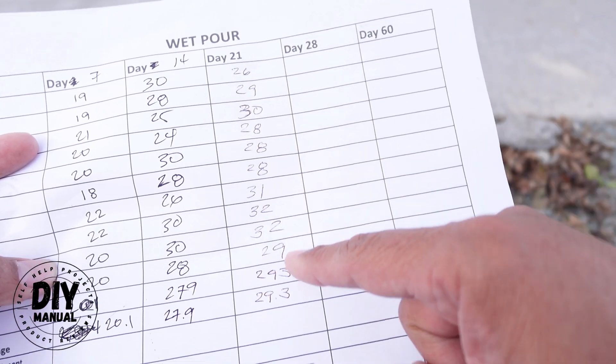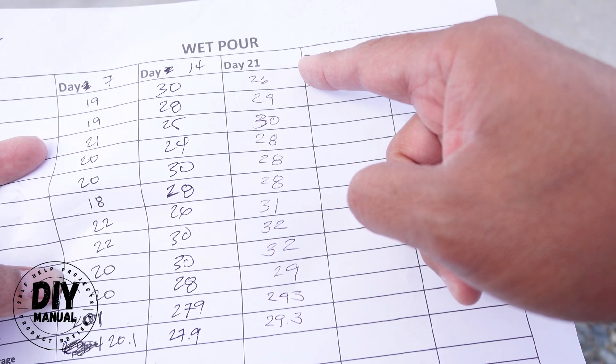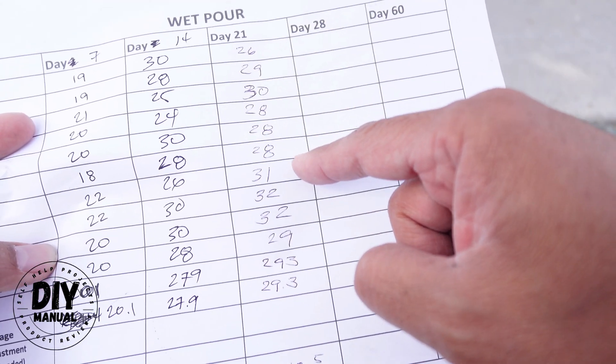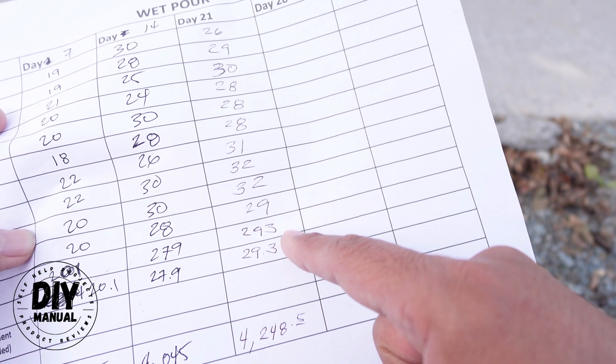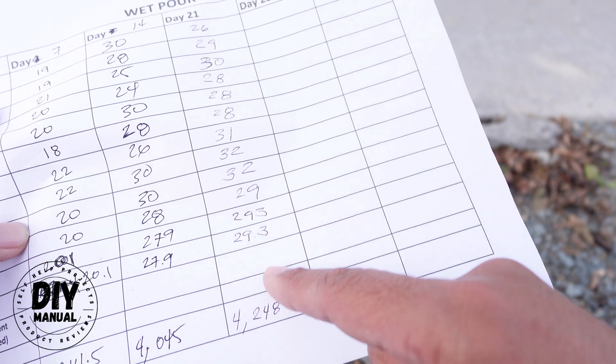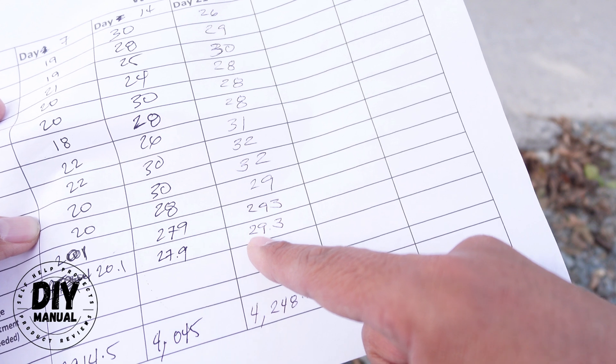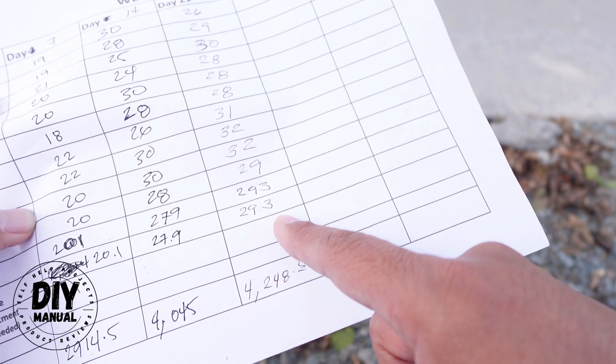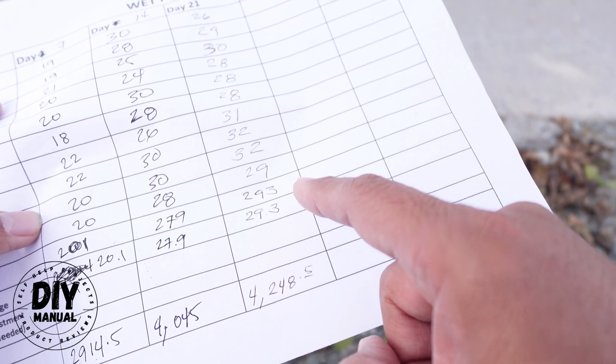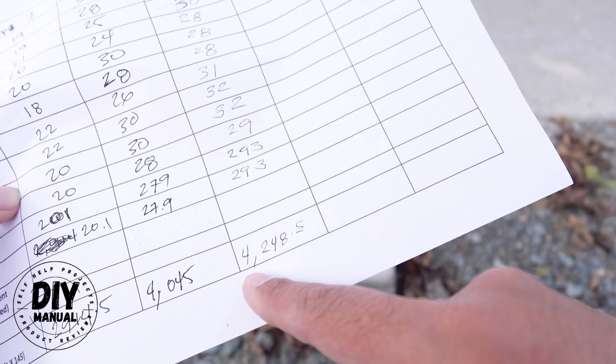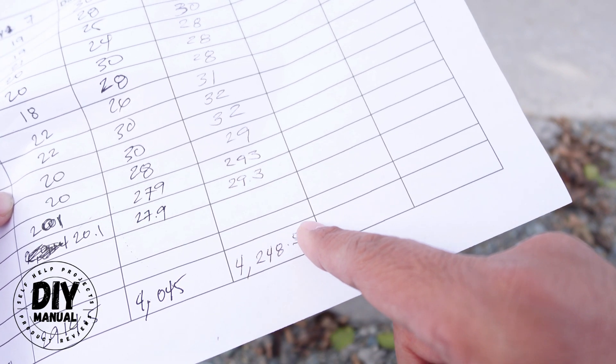So if you add all this, it's 293. And if you get the average, basically we have 10 tests, so divide by 10, we got a 29.3. And we multiply that by 145 because each megapascal or Newton meter per square milliliter is equal to 145 PSI. So 29.3 times 145 PSI. Now we get 4,248.5 PSI.